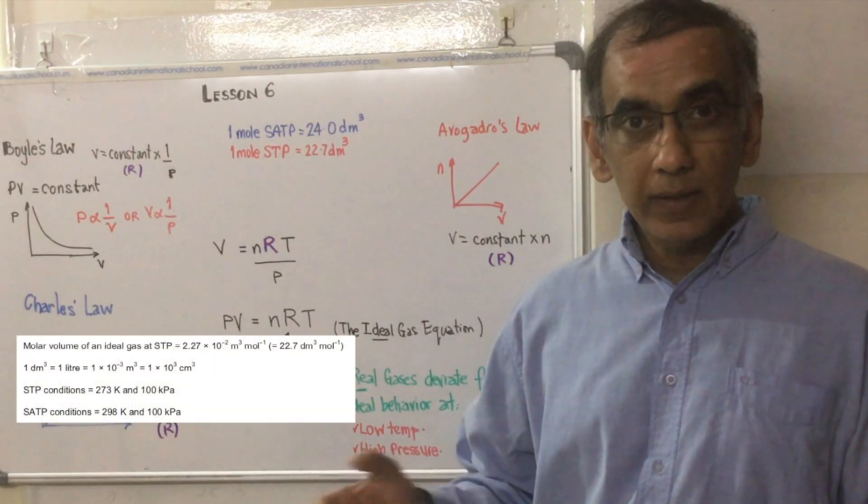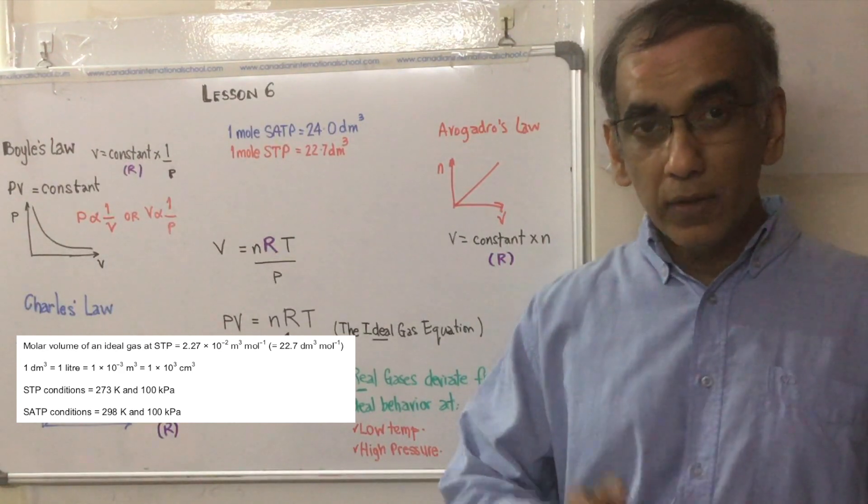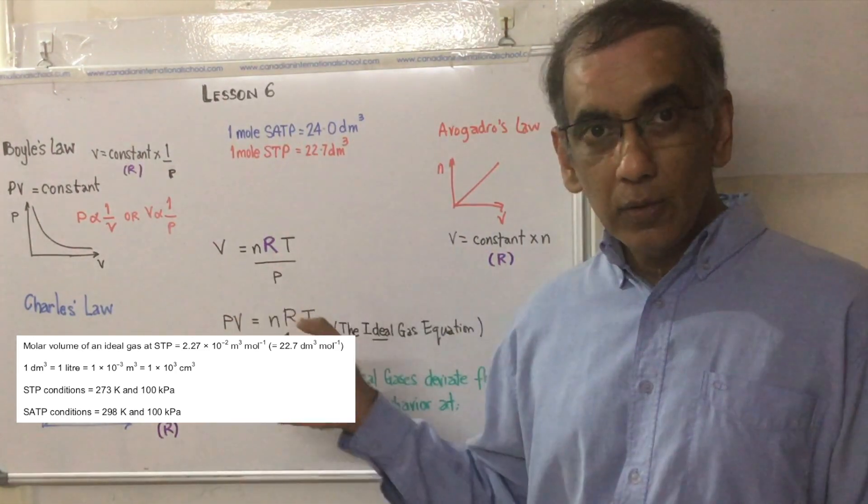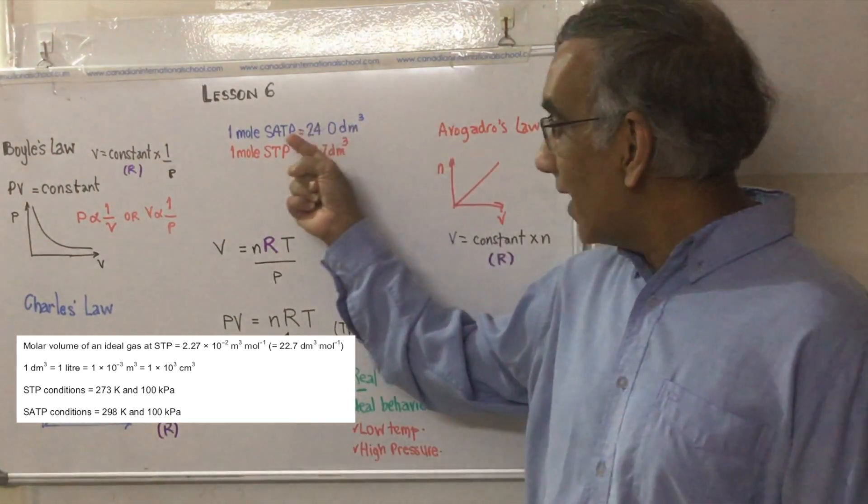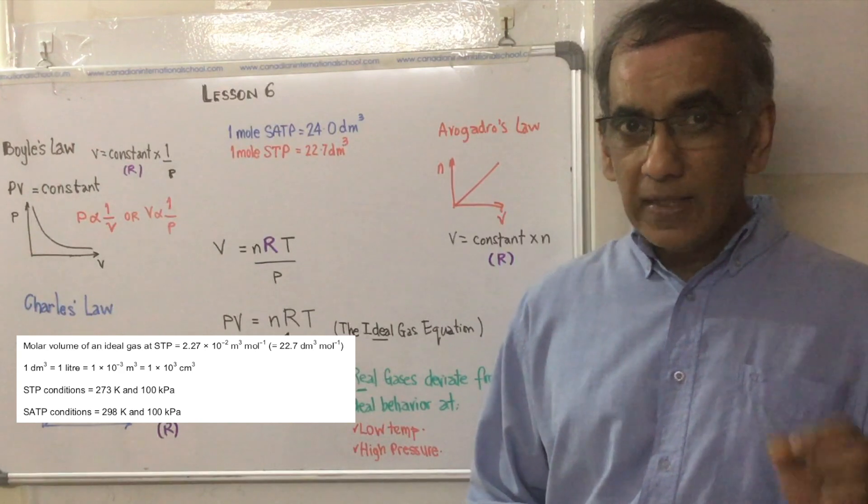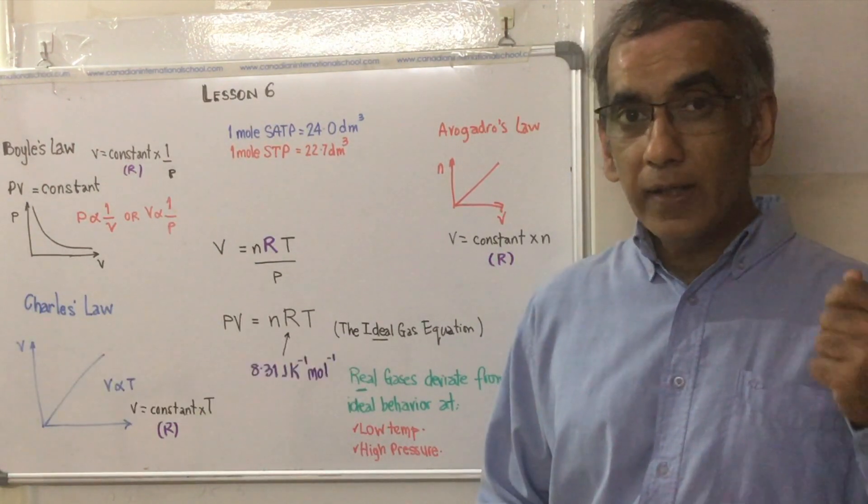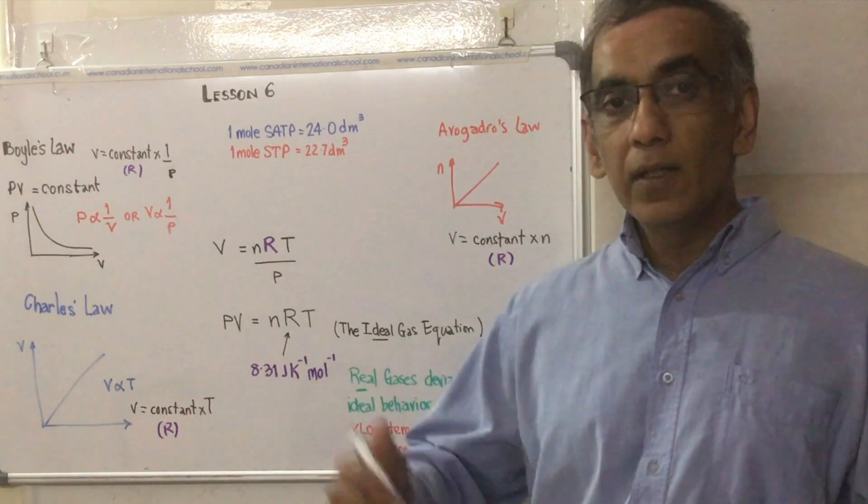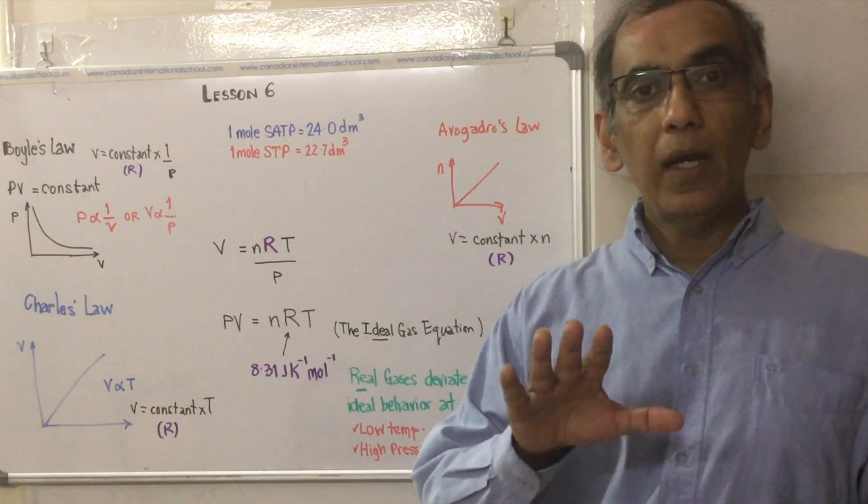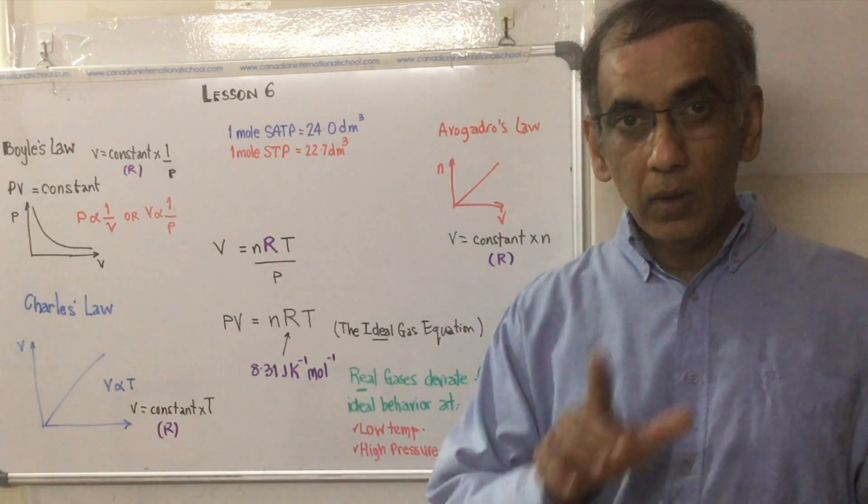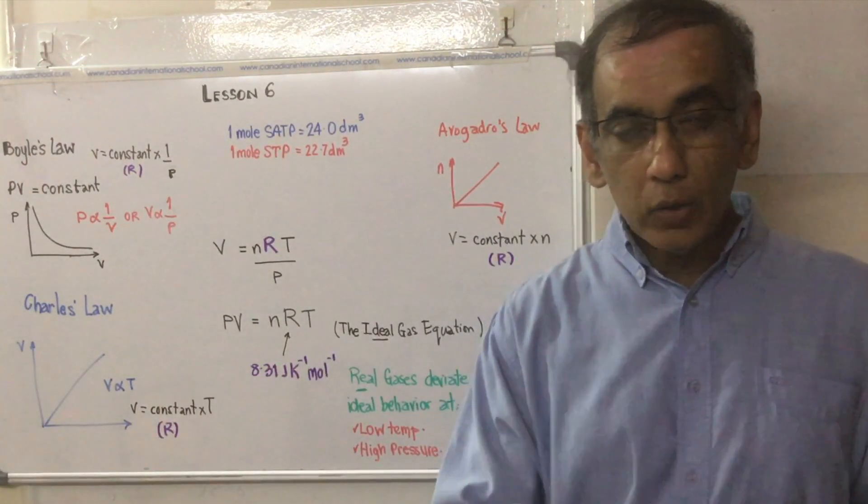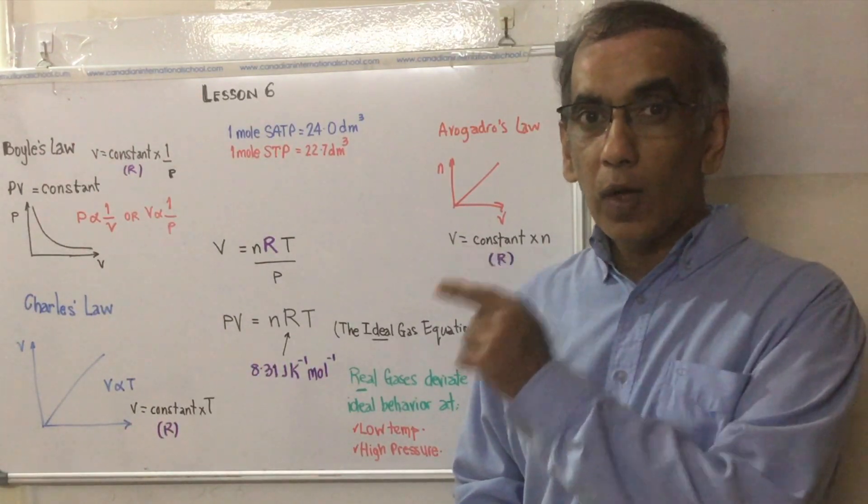In the IB chemistry data booklet it says that one mole of a gas under those conditions occupies 22.7 dm³. Under standard ambient temperature and pressure, which is room temperature and pressure, 25 degrees Celsius which is 298 Kelvin, 273 plus 25 equals 298 Kelvin, at 298 Kelvin and 100 kilopascals of pressure, one mole of a gas occupies 24.0 dm³. One dm³ equals one liter.